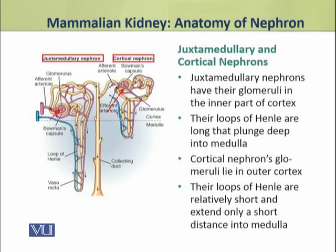Based on their position, nephrons are of two types: juxtamedullary nephrons and cortical nephrons. Juxtamedullary nephrons have their glomeruli in the inner part of the cortex, and their loops of Henle are long, plunging deep into the medulla. Cortical nephrons have their glomeruli in the outer cortex, and their loops of Henle are relatively short, extending only a short distance into the medulla.